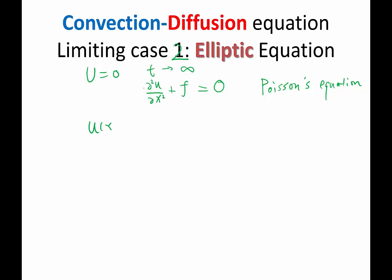We're going to expand u of x using Fourier series again: k equals minus infinity to infinity, û_k e^(ikx). And the second derivative is going to become minus k equals minus infinity to infinity, k² times û_k times e^(ikx).